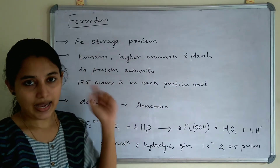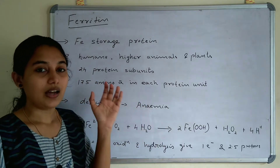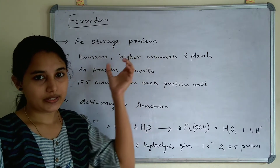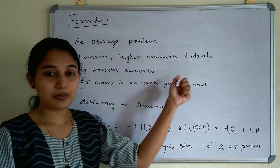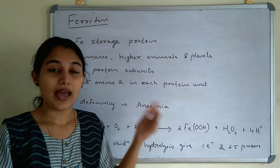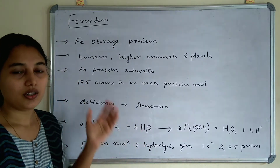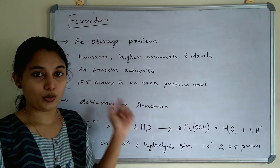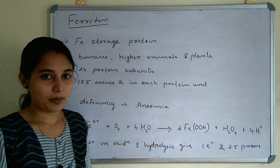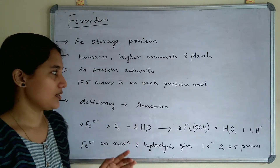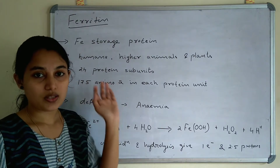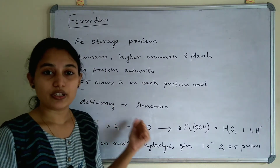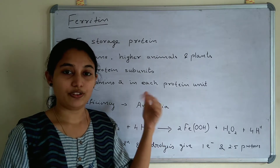Ferritin is an iron storage protein. Ferritin is found in humans, higher animals, and plants. In ferritin, 24 protein subunits are present, and in each subunit, 175 amino acids are present. The deficiency of ferritin causes anemia, since ferritin contains iron — deficiency of iron causes anemia.